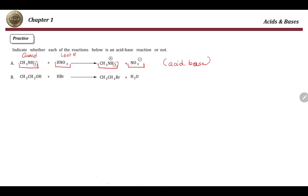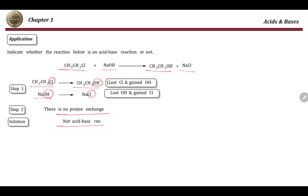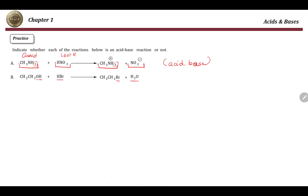Looking at the second example, we have OH here, we have Br, and then we have HBr which became H2O. Again, this is not a proton exchange process because we replaced the OH by Br and the Br by an OH group. That's why this is not an acid-base reaction — it is not a proton transfer process.